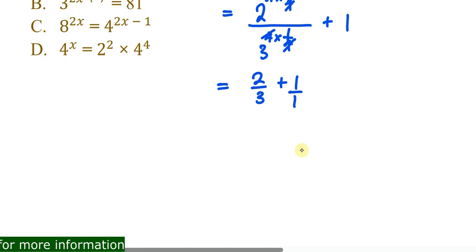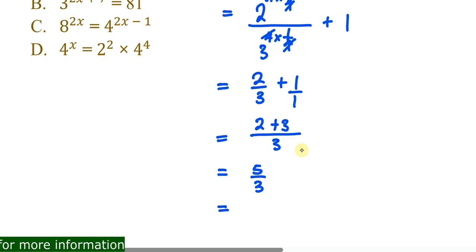To add 2/3 plus 1, write 1 as 1/1. Find the common denominator — which is 3. So: (1 × 2)/3 + (3 × 1)/3 = 2/3 + 3/3 = 5/3. Since 5/3 is an improper fraction, convert it: 3 into 5 goes 1 remainder 2, giving 1 and 2/3. That is the final answer for part (b).